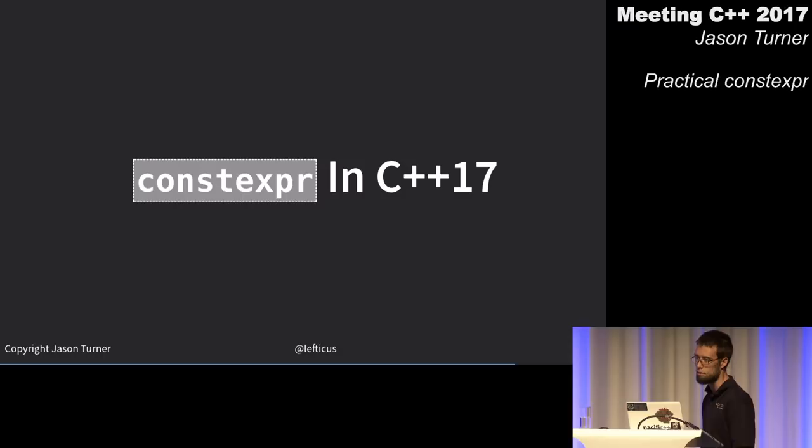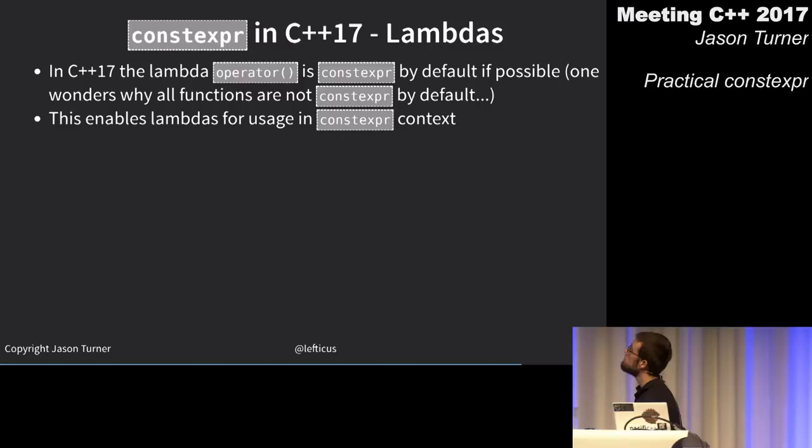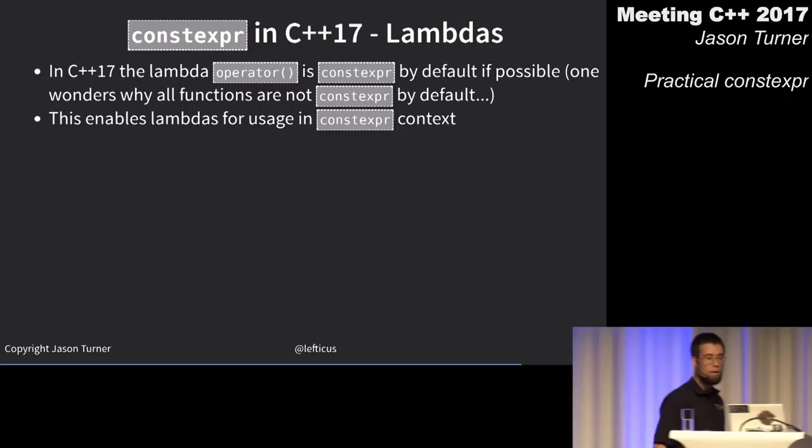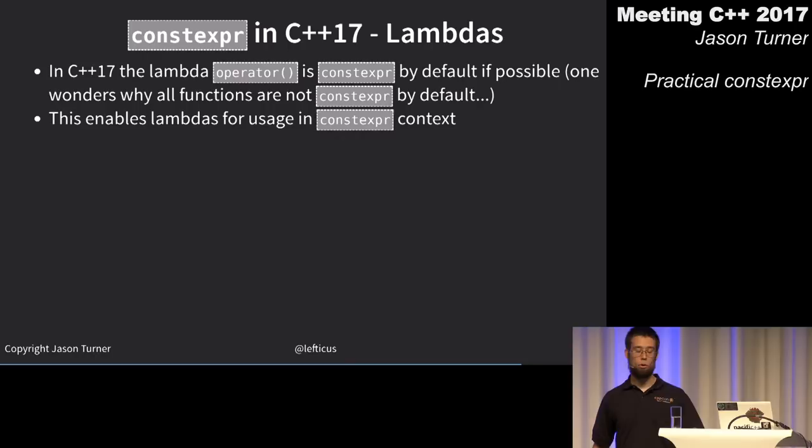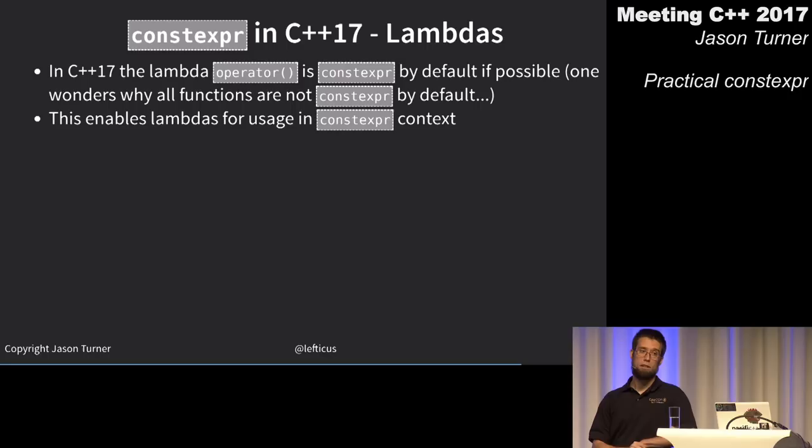In C++17, a lambda's call operator (operator()) is constexpr by default if possible. The compiler already knows the rules for constexpr — if a lambda can be constexpr, it automatically makes it constexpr.